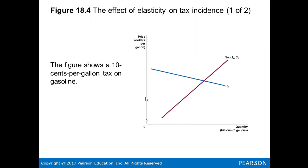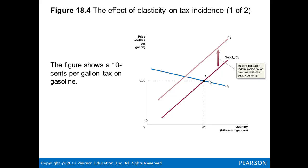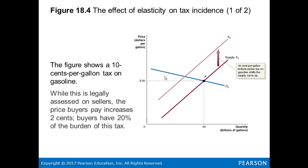The figure shows a 10 cents per gallon tax on gasoline — the federal government has assessed an excise tax on gasoline. This shifts the supply curve from S1 to S2, which means you will supply less of the product at the same price. While this is legally assessed on the sellers, the price buyers pay increases by 2 cents, meaning buyers bear 20% of the tax burden — the equilibrium shifts from A to C, at $3.02, which includes 2 cents of the 10 cents tax.